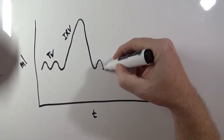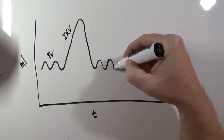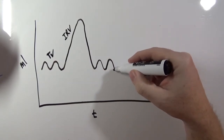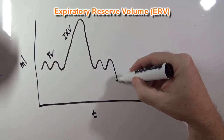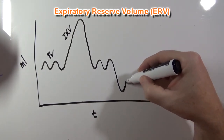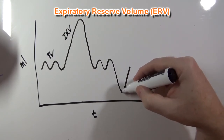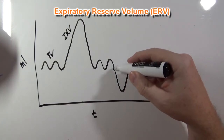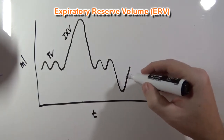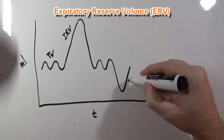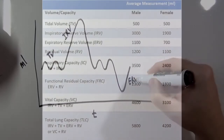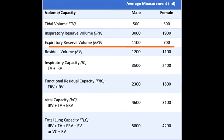We go back to normal breathing — breathe in, breathe out. But then after I breathe out, I'm going to breathe out as much air as I possibly can, and the volume of air in the lungs would decrease. This volume of air breathed out after a normal tidal volume exhalation is the expiratory reserve volume. The average expiratory reserve volume for a male is 1100 milliliters, and for a female is 700 milliliters.